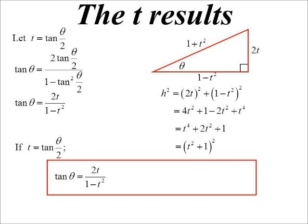So now I can get my T results for sine and cosine. So if T is equal to tan theta on two, then tan theta, two T on one minus T squared. Sine theta, two T on one plus T squared, and cosine theta, one minus T squared on one plus T squared.